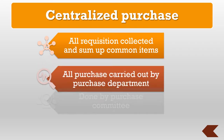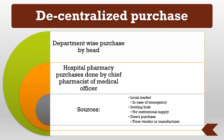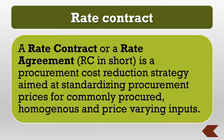In decentralized purchase, a junior medical officer or pharmacist carries out direct purchases from wholesalers, institutes purchase bids, makes emergency purchases from the local market, and enters into rate contracts. Rate contract is an agreement for procurement cost reduction strategy aimed at standardizing procurement prices for commonly procured, homogenous, and price-varying inputs. A rate contract given to a bidder binds them to supply at an agreed rate a specified total quantity against purchase orders released from time to time until the agreed quantity contract is complete. It ensures assured supply at an assured time of assured quality.